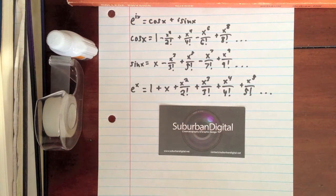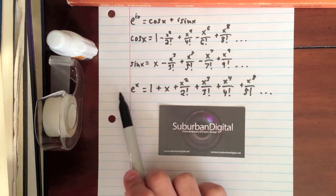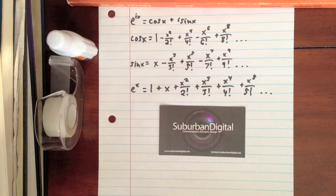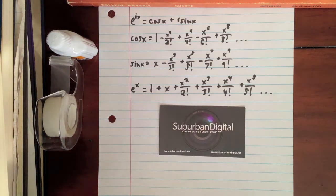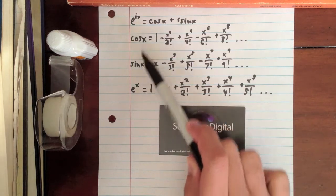Now, the Taylor series, or polynomial approximation, of Euler's formula without any imaginary numbers, shown here, resembles a combination of the polynomial approximations of cosine x and sine x, shown right here, respectively.